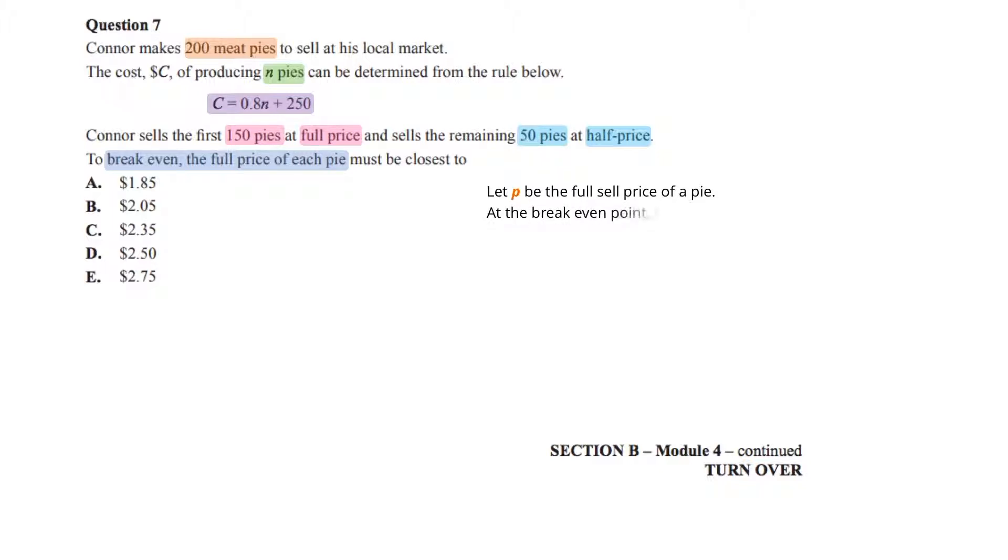The question is asking for the full price of each pie in order to break even. So, let P be the full sell price of a pie. At the break even point, revenue equals cost. In other words, 150P plus 50 times P over 2 equals 0.8 times 200 plus 250.